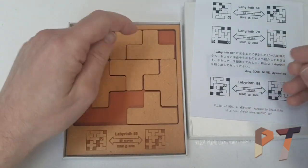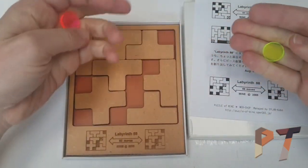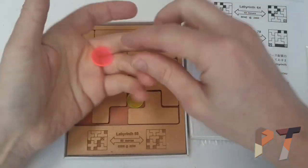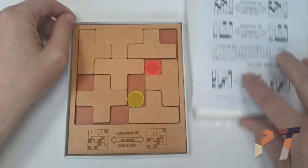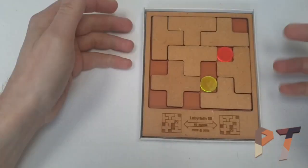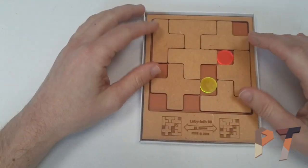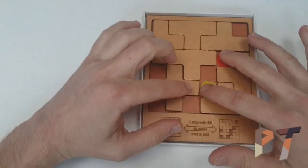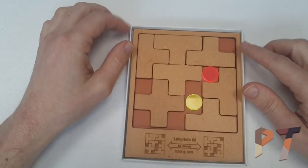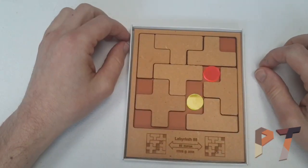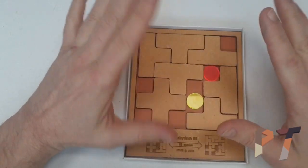The green goes in here and the red goes in there. The actual puzzle is quite simple. It's just to swap the position of these two counters, the green and the red.